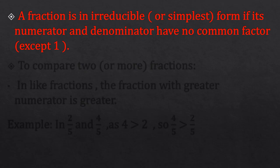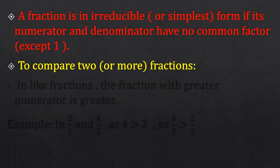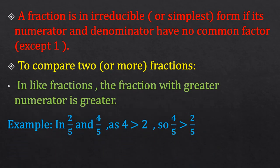Now let us see how to compare two or more fractions. In like fractions, the fraction with the greater numerator is greater. For example, comparing 2 upon 5 and 4 upon 5 — these are like fractions. Since 4 is greater than 2, we can say that 4 upon 5 is greater than 2 upon 5.